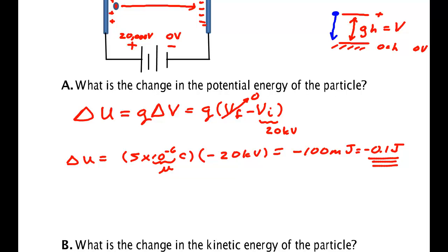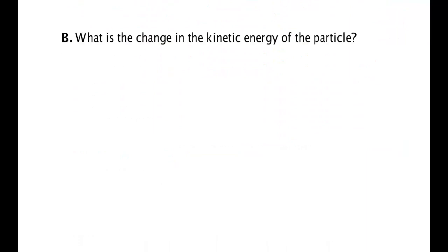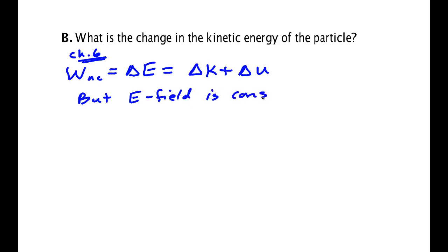Where does that energy go? It goes into kinetic. The ball picks up speed. So that's the next question that could be asked in this part of the section. What's the change in the kinetic energy of the particle? Work non-conservative is delta E. This is chapter 6, way back. That's delta K plus delta U. But E field is conservative. So W non-conservative is 0.